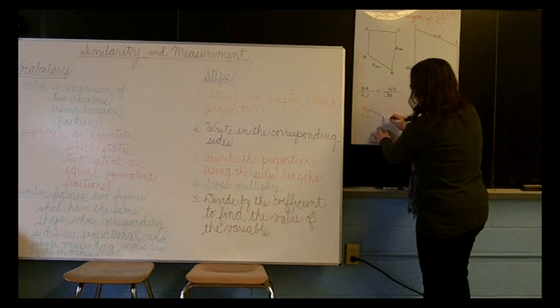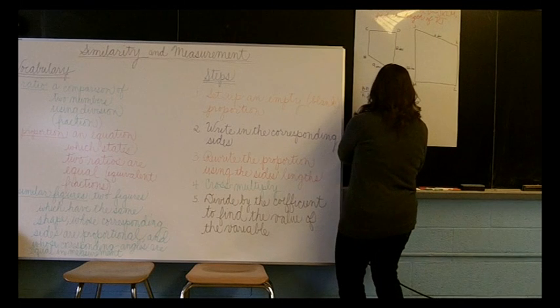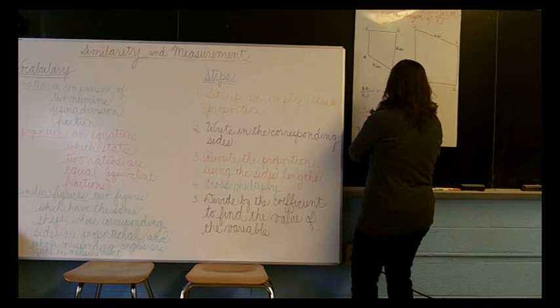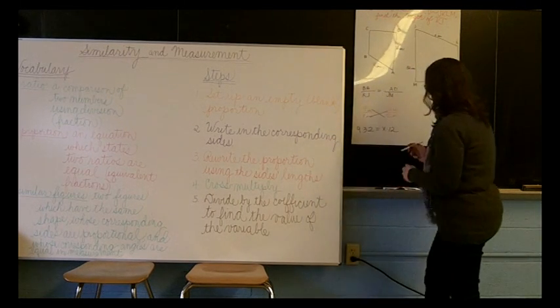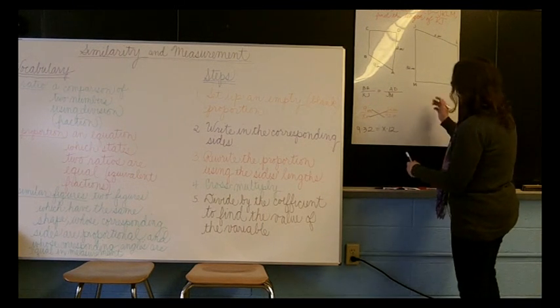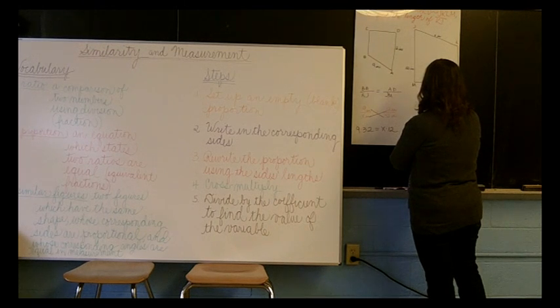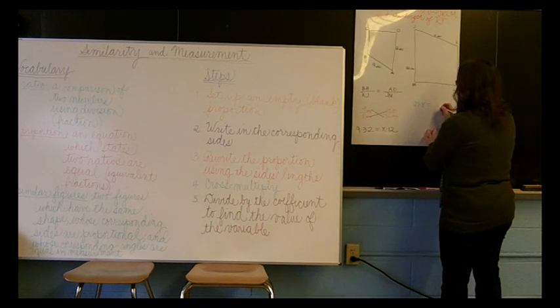Now our next step is that we are going to cross multiply. That means we are going to multiply 9 and 32, and then X and 12. And what that gives us then is 288 equaling 12X.